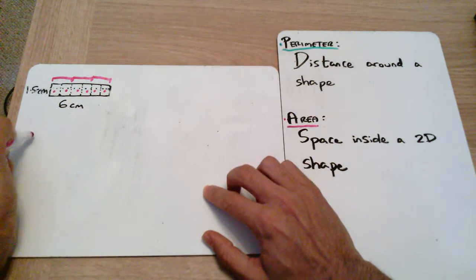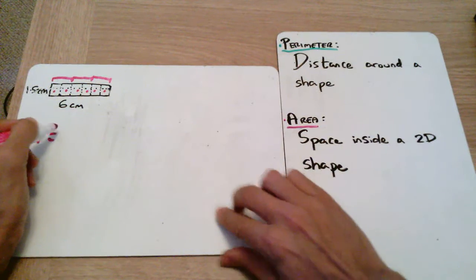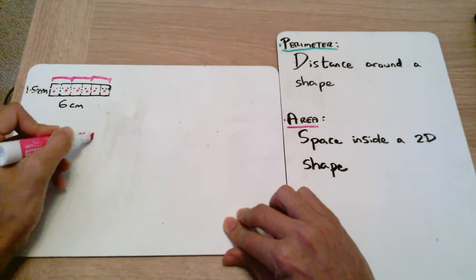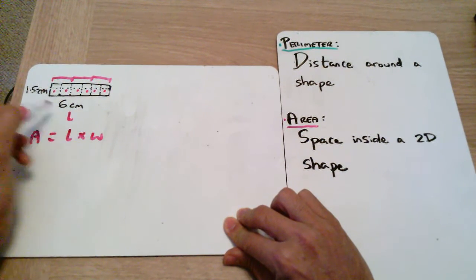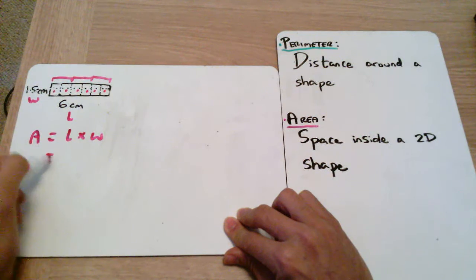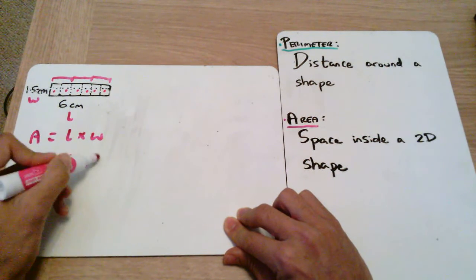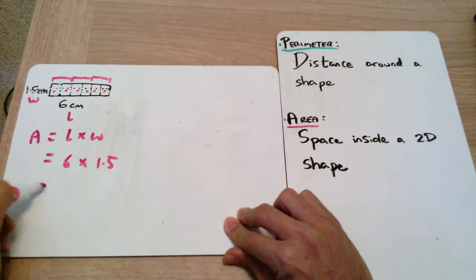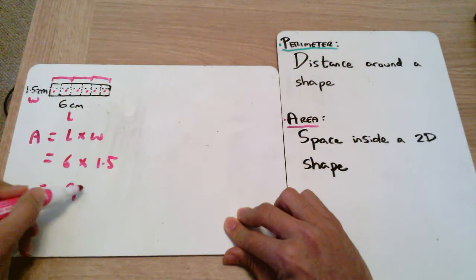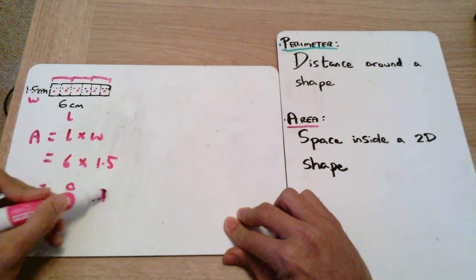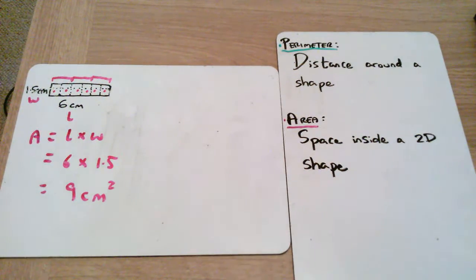Our formula is the area equals the length times by the width. The length here is six, the width is 1.5. Six times by 1.5 - whether you do this with a calculator, in your head, or via other methods - you get a value of nine, and the units being centimeters squared. So we can see that that's also worked. We've got our area is nine square centimeters.